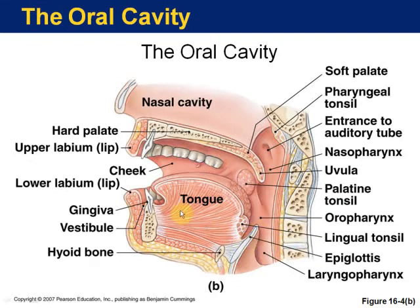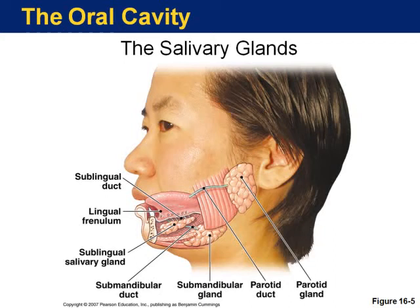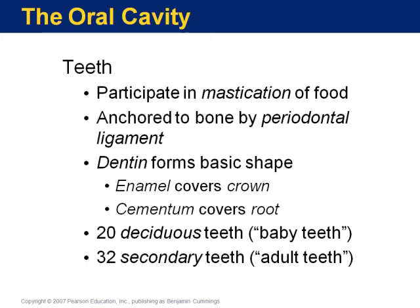Know that the epiglottis helps block food from entering the trachea. Know that there are three pairs of salivary glands: the parotid, the sublingual, and the submandibular. Know the functions of saliva, which includes amylase and the digestion of starches. You will not need to label the salivary glands, and don't worry about the teeth.